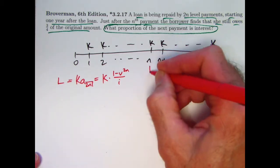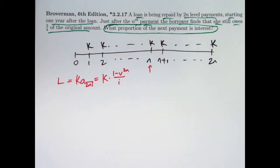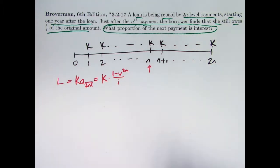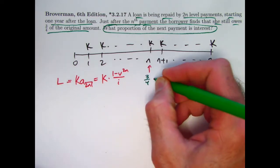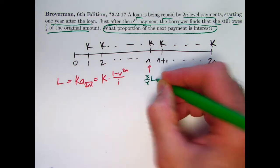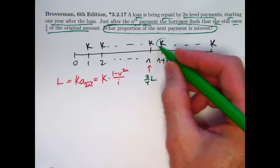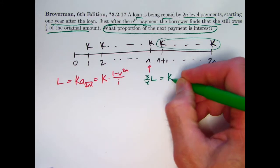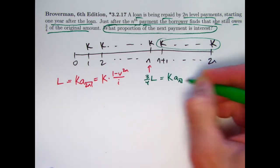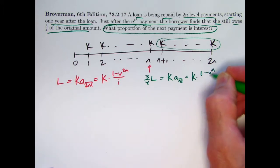I know at time N that the outstanding balance is three-fourths of L. So I could write down a valuation at time N. Three-fourths L should be the present value at time N of the remaining payments: K times a(N), which you could write as K times (1 - V^N)/i.